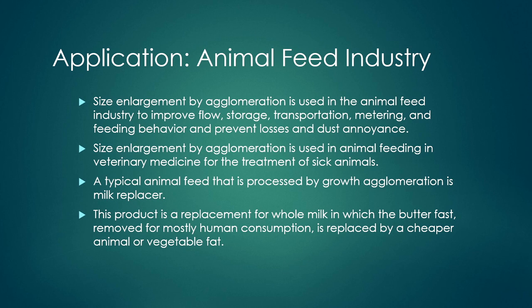Size enlargement by agglomeration is widely used in the animal feed industry to improve flow, storage, transportation, metering and feeding behavior, and to prevent losses and dust annoyance. It is also used in veterinary medicine for treatment of sick animals. Enlarged-size products serve as a replacement for whole milk in which butter fat is replaced by cheaper animal or vegetable fat for mostly human consumption.